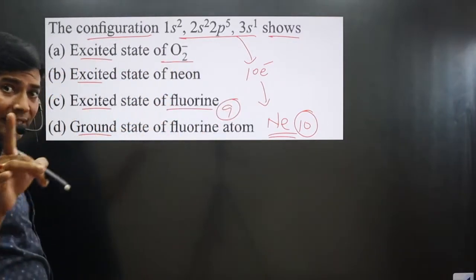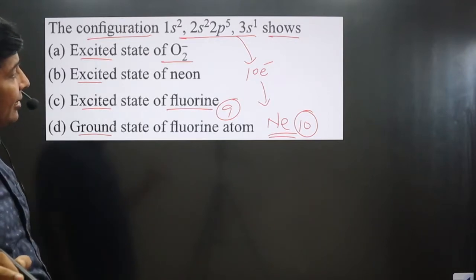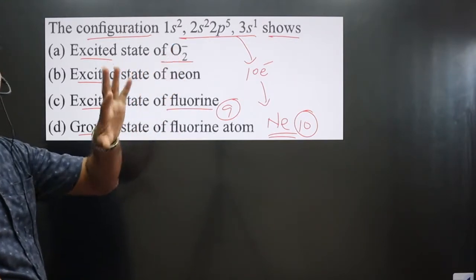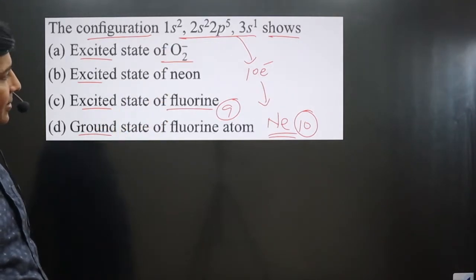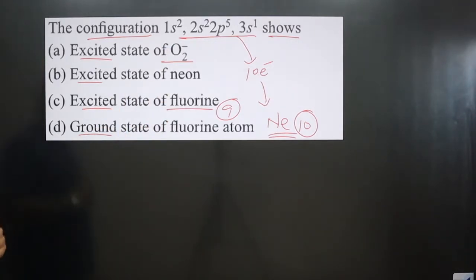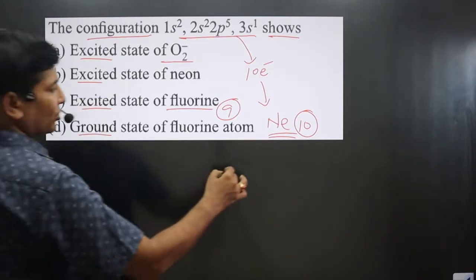In the case of O₂⁻, each oxygen is 8 electrons, making the calculation different - this cannot be the answer. We have neon. Now if we write the general electronic configuration of neon in its ground state.